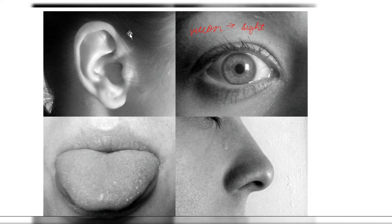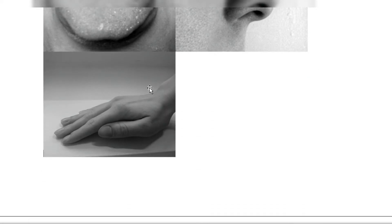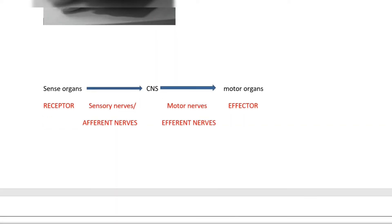I can assure you that if you watch this video without skipping, you will master this topic. Before talking about the nose and its mechanism of olfaction, let's have a brief look at sense organs in general. We have five sense organs: the eye for sight or vision, the ear for hearing sound, the nose for the sense of smell or olfaction, the tongue for the sense of taste or gustation, and the skin for the sense of touch or tactile.